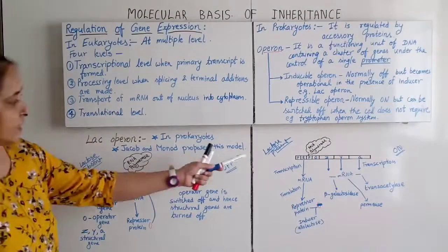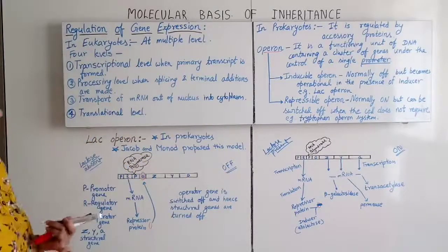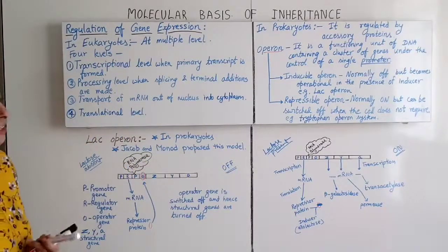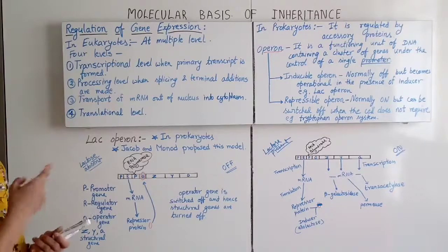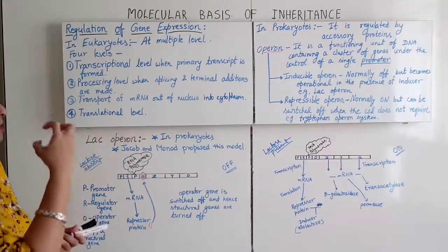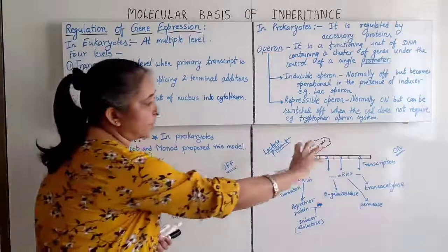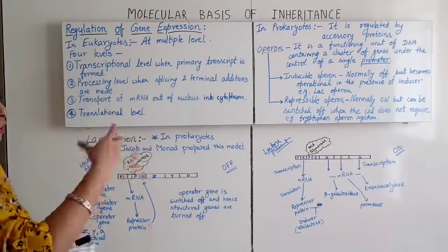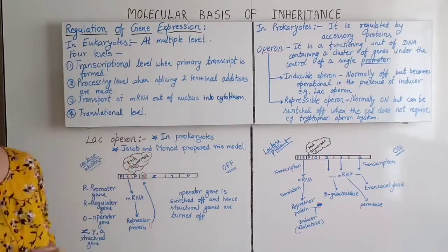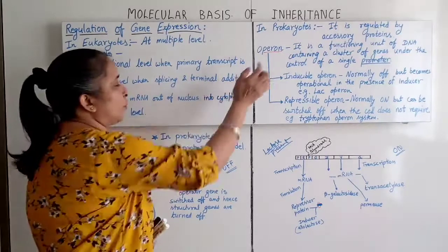In the diagram, there is a promoter gene, regulator gene, structural genes, and an operator. All these genes — operator, structural, regulator, promoter — are present on this segment of DNA, all controlled by a single promoter. This structure is called an operon.